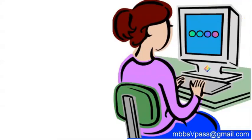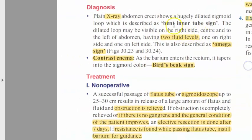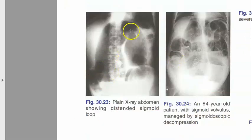Now for diagnosis, which is where most of your marks come from, because there are so many signs on X-ray. On X-ray you will see the bent inner tube sign. You will also have two air-fluid levels - one on the right side and one on the left side. This is also called the omega sign.